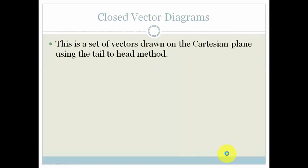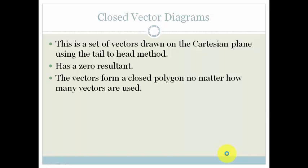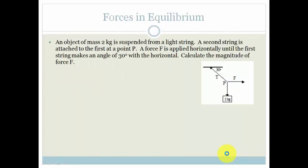It's actually a very simple concept. A closed vector diagram is a set of vectors drawn on the Cartesian plane using the tail-to-head method, but what's special about it is it has a zero resultant. In other words, the vectors form a closed polygon, no matter how many vectors are used. The closed vector diagram happens when forces are in equilibrium, which means that they all balance each other out, so therefore there would be no resultant.